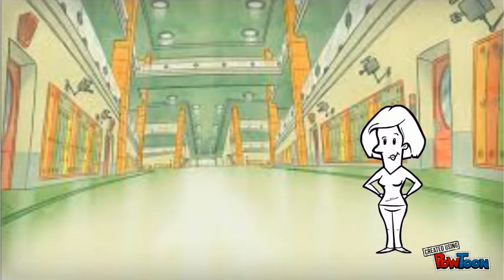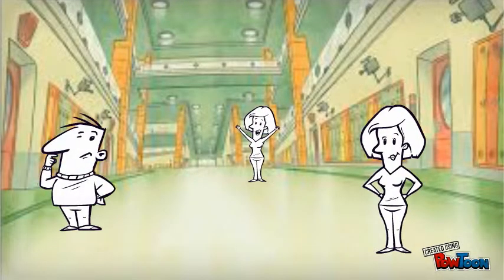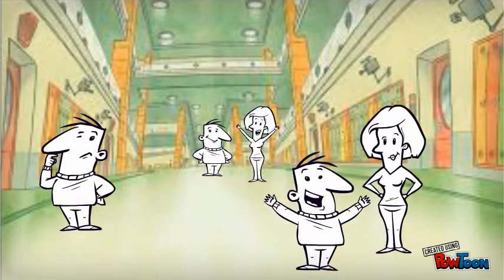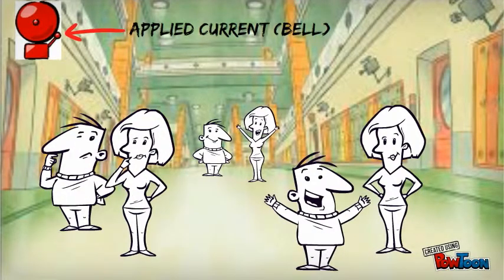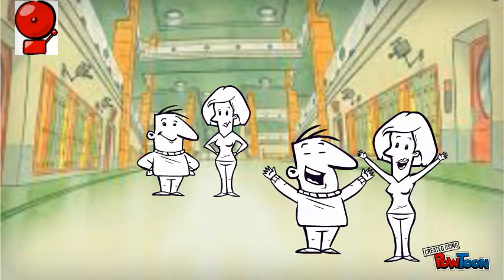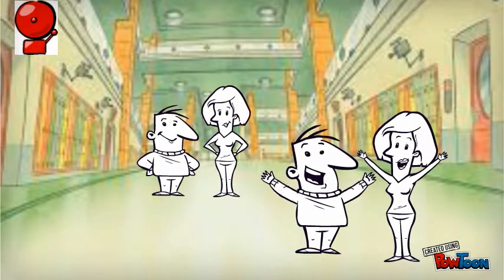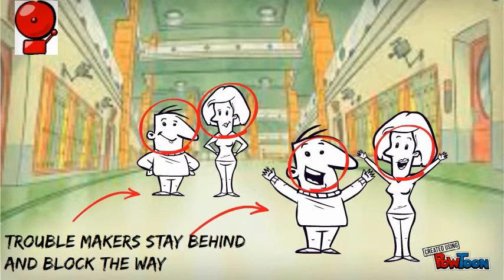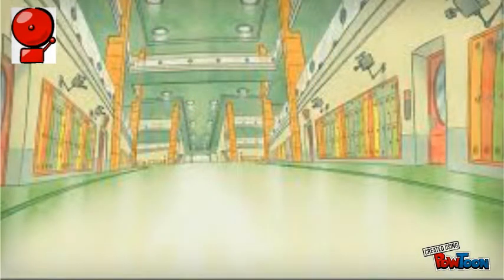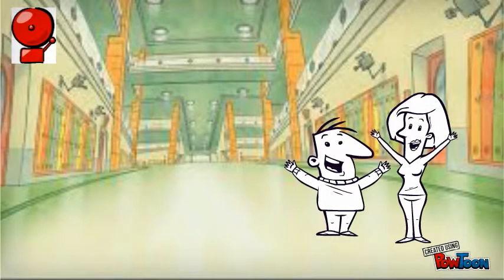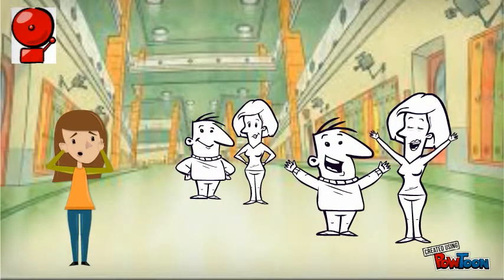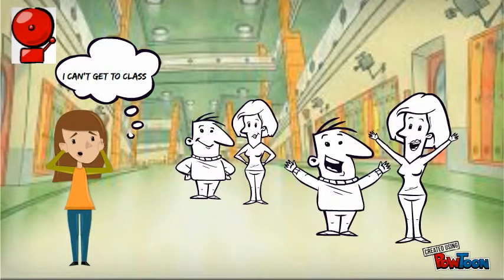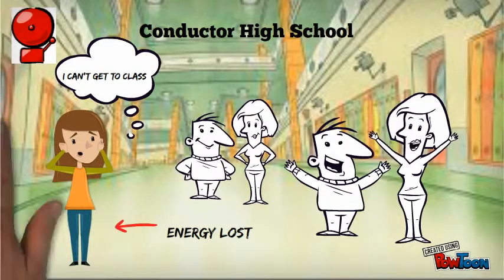Think of free electrons in a typical conductor as students hanging out in a school atrium. An applied current is like the bell announcing the beginning of class. In an instant, individual motion transforms into a single, united movement towards the classrooms — were it not for a few troublemakers who linger, stumble at the staircase, and keep gossiping. Because of the resistance they cause, some students are late to class and miss the first part of the lesson. Thus, the current loses energy. Such is life at Conductor High School.